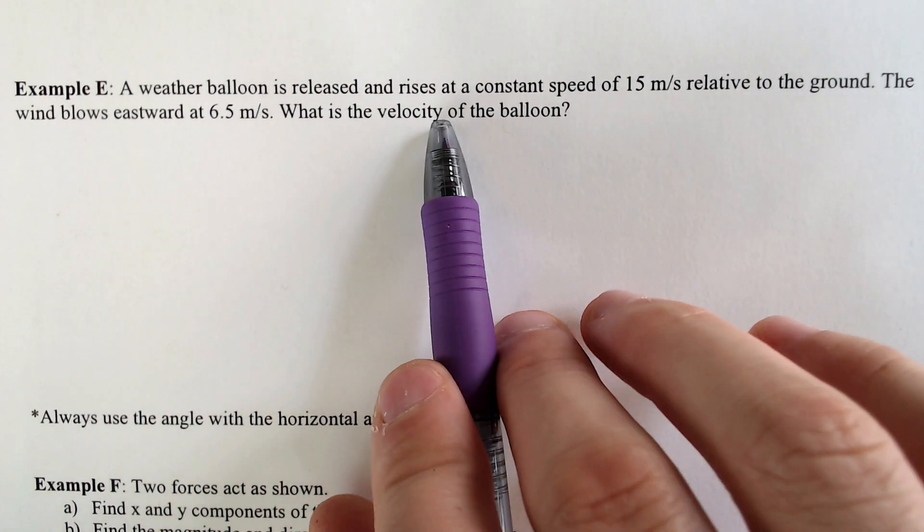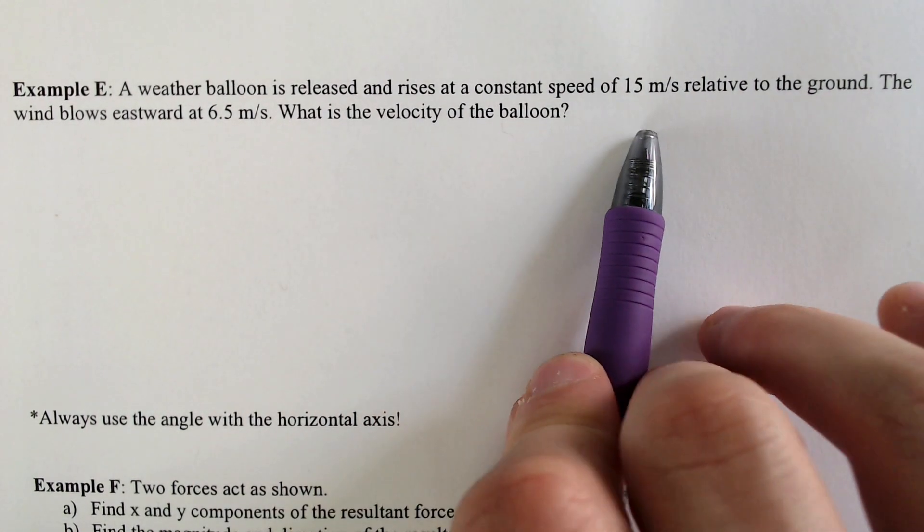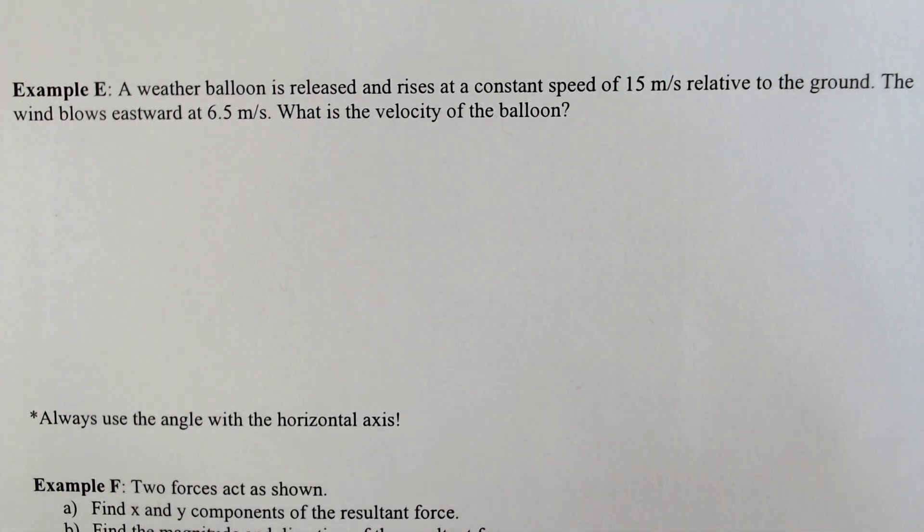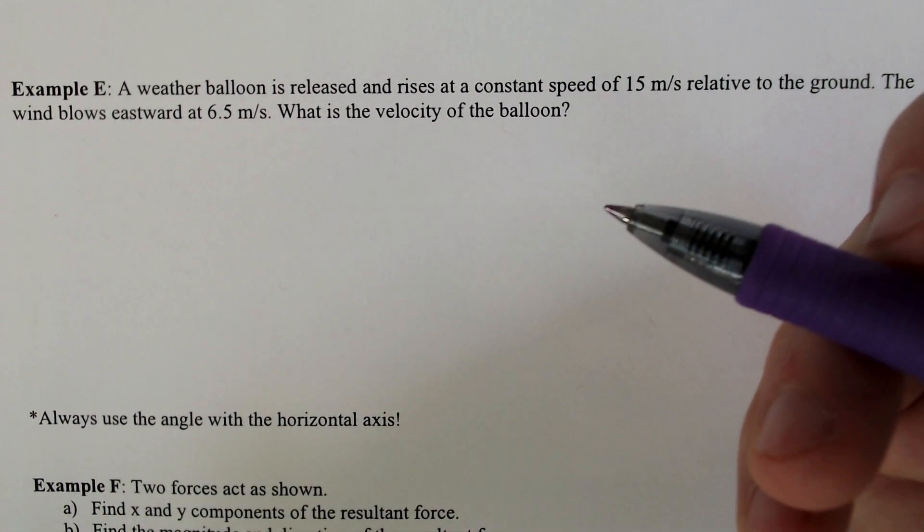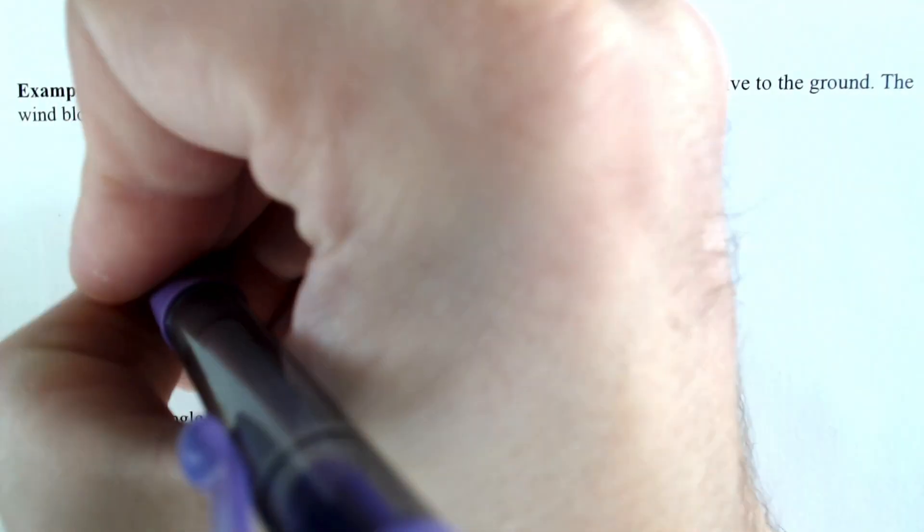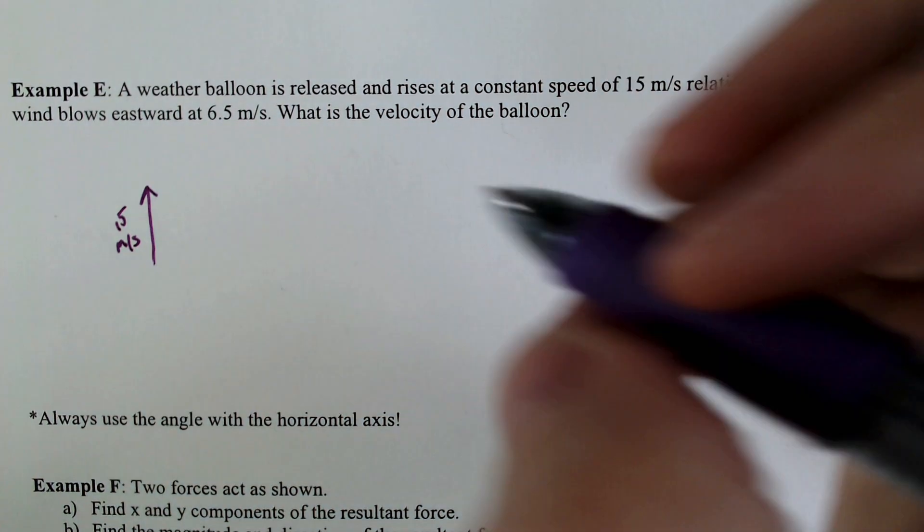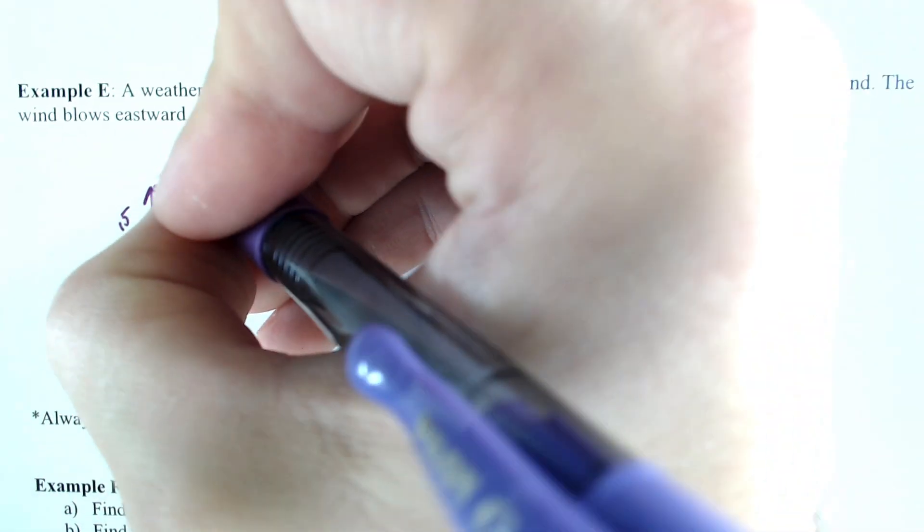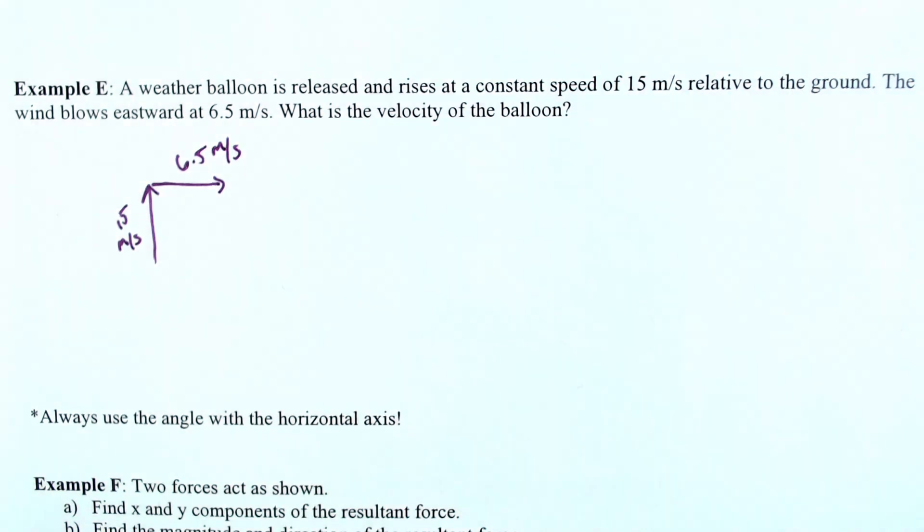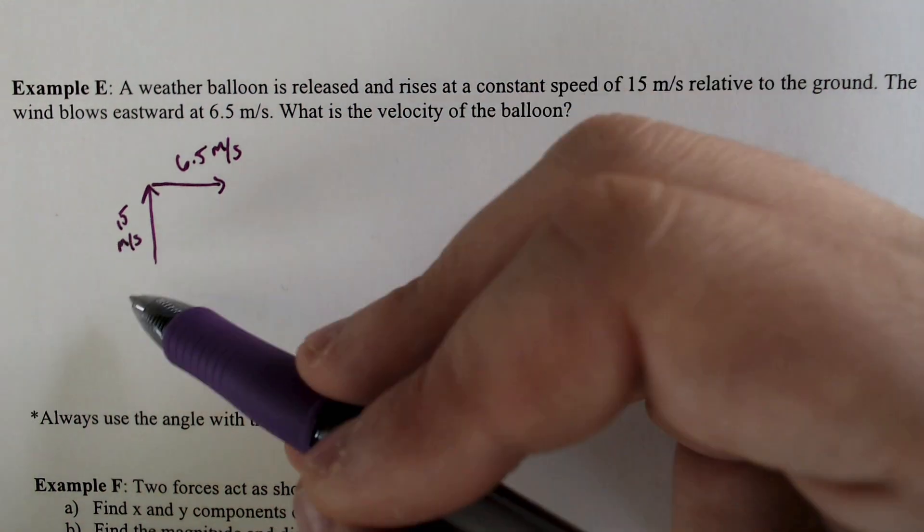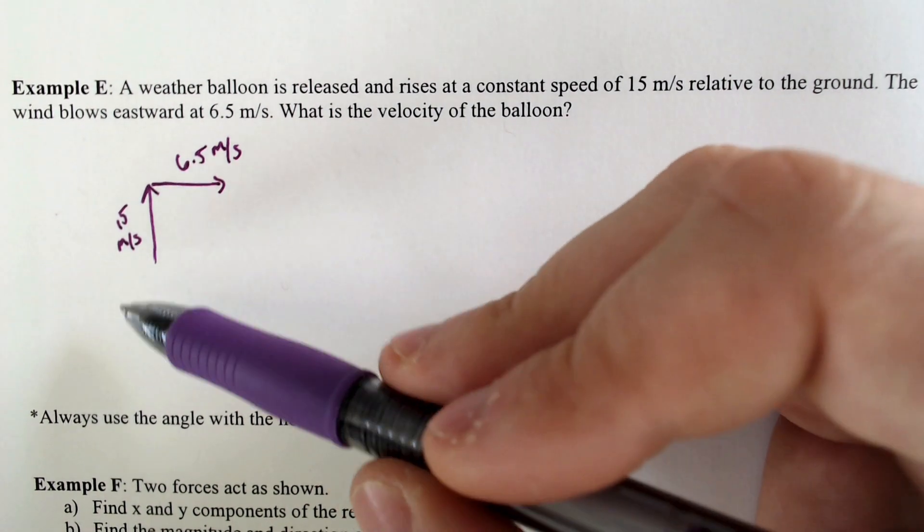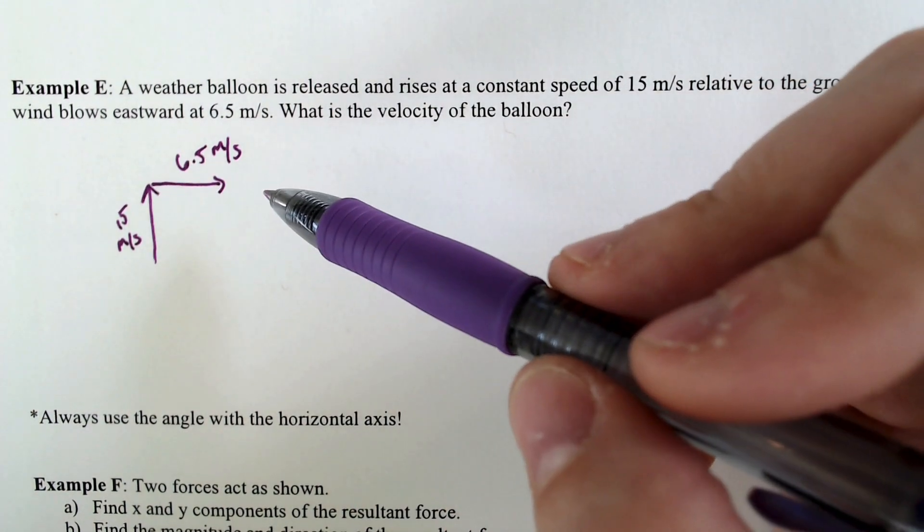A weather balloon is raised and rises at a constant speed of 15 meters per second relative to the ground. And then the wind blows eastward at 6.5 meters per second. What is the velocity of the balloon? Well, it's going up at 15 meters per second, but it's also going eastward at 6.5 meters per second. Notice how I've just combined these vectors from tail to head and head to tail. So we got 15 meters per second and 6.5 meters per second.